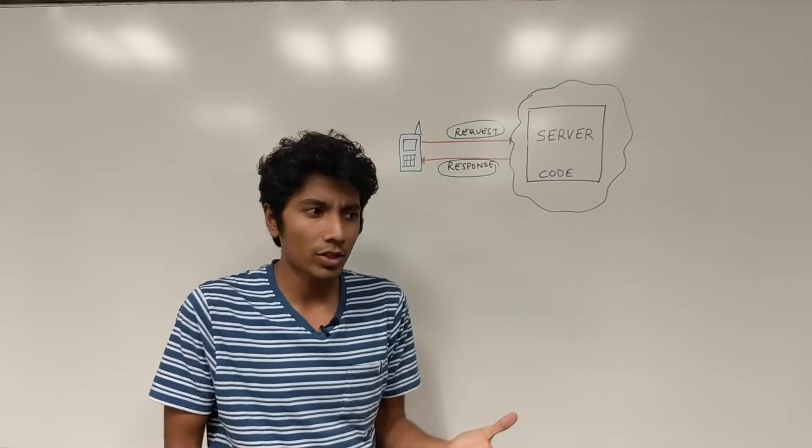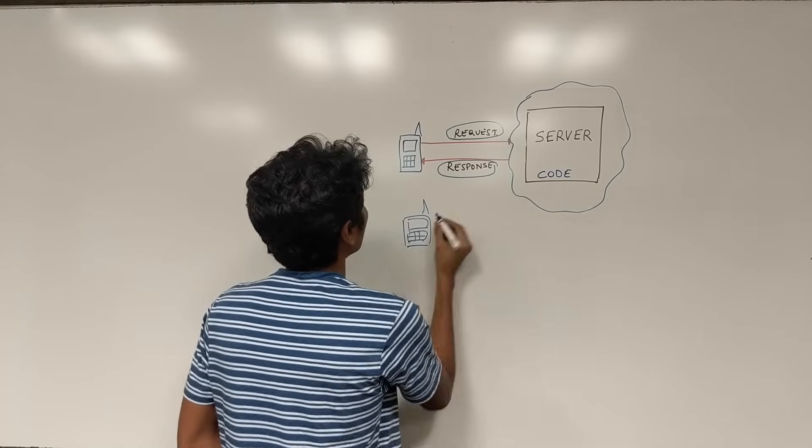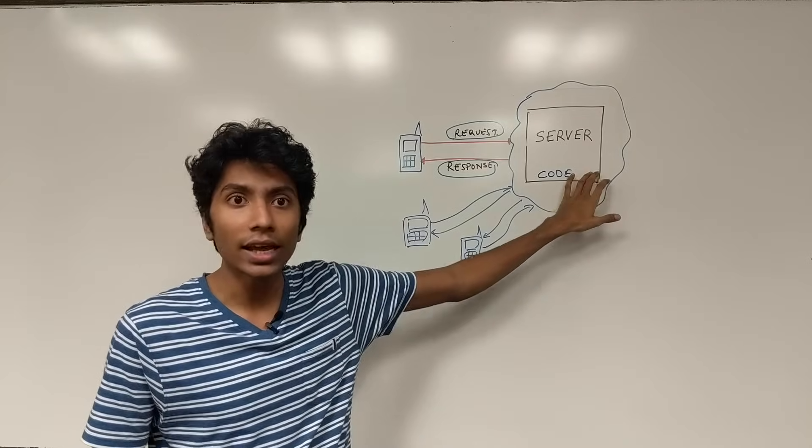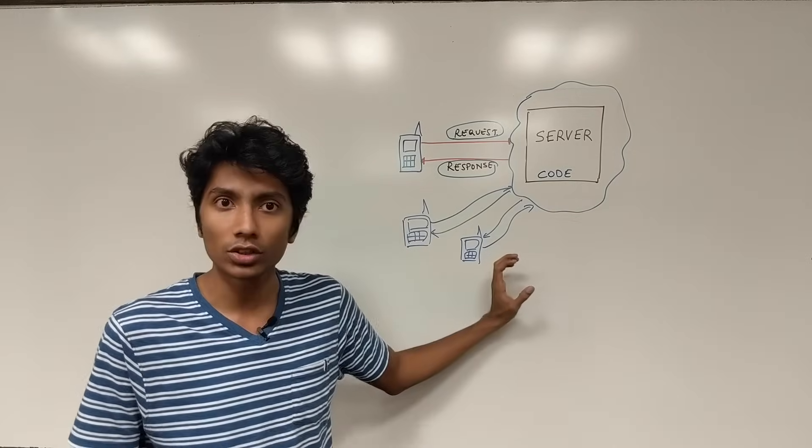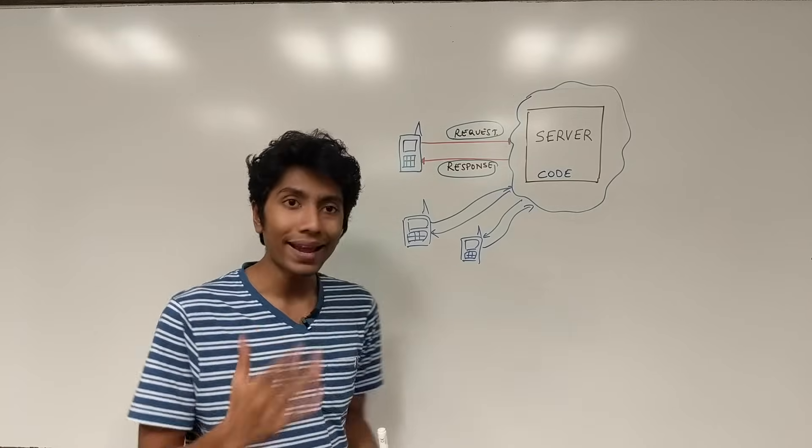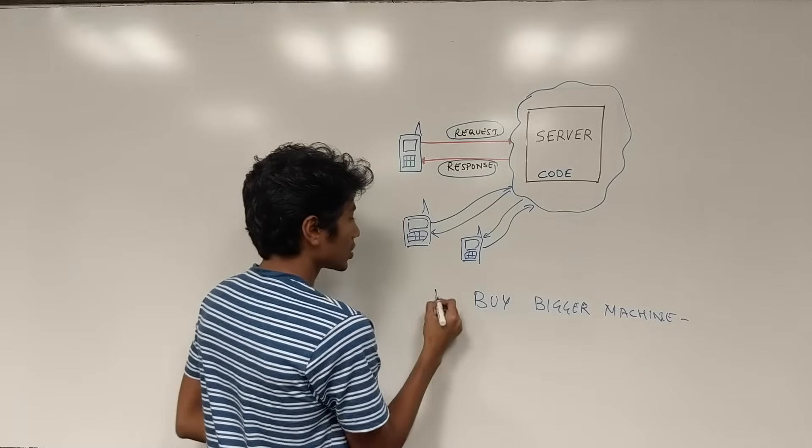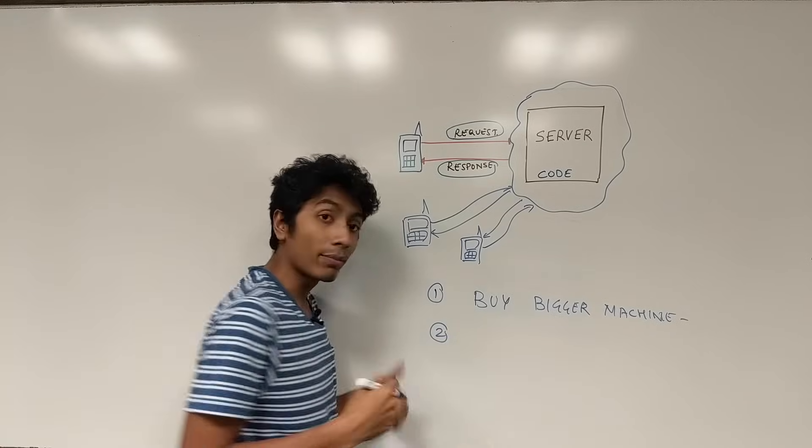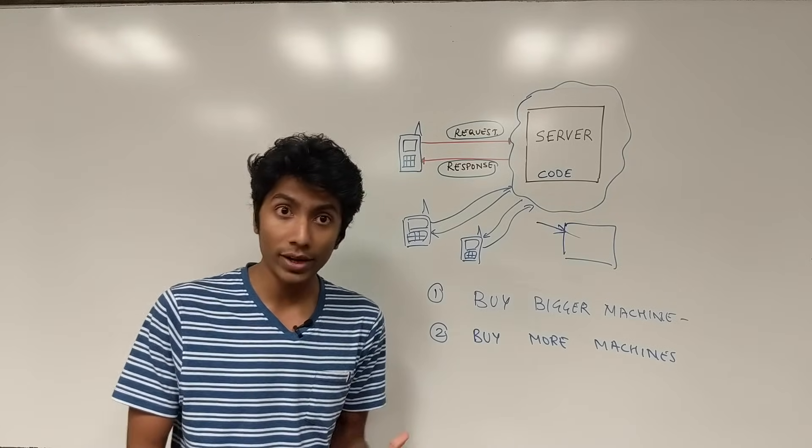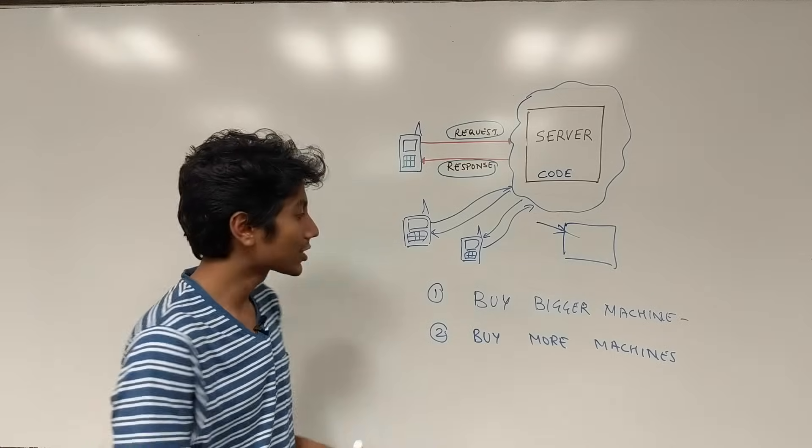What business requirements could we possibly have? Well, there's lots of people who are using your algorithm now and it gets to a point where the code that you have running on the machine is not able to handle all of these connections. So what do you do? One of the solutions is to buy a bigger machine. This is solution number one. Solution number two is to buy more machines. The ability to handle more requests by buying more machines or buying bigger machines is called scalability.